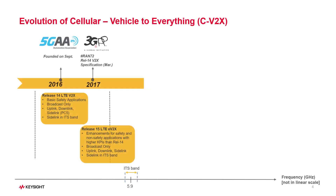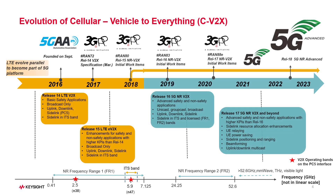The first Cellular V2X standard, based on the 4G LTE air interface, was developed under Release 14 and was further enhanced in Release 15 by 3GPP. Broadcast communication was the only supported cast type in LTE V2X. The main intention in LTE V2X was the support of use cases to provide road safety, fulfilling the demanding reliability and latency requirements. The PC5 interface for direct communication was created, and its operating band is in the 5.9 GHz band.